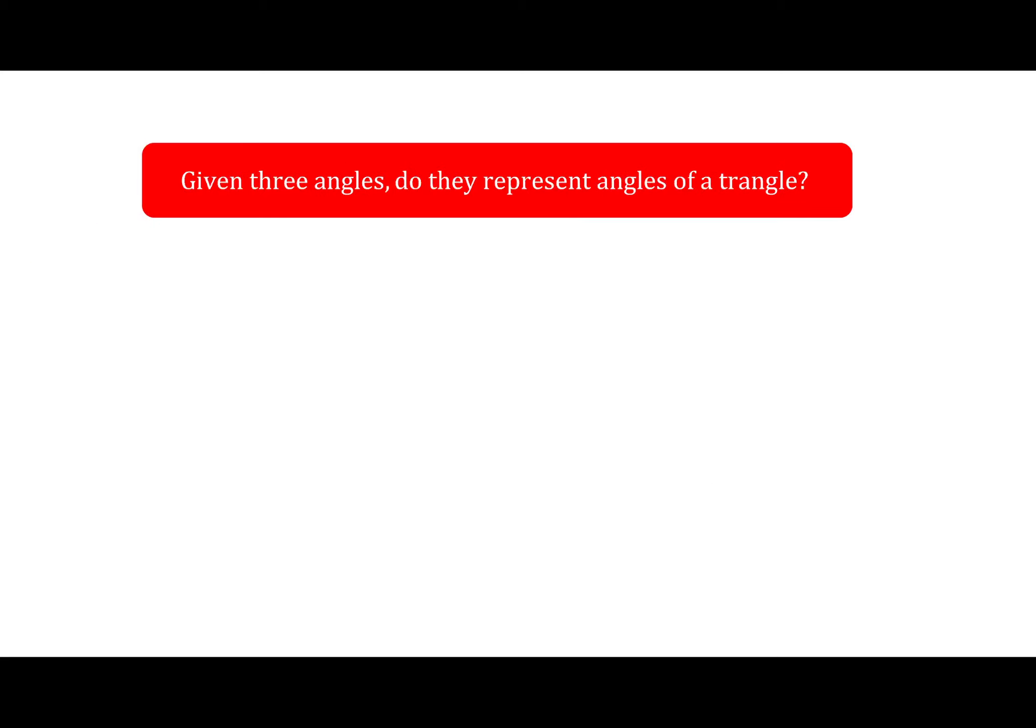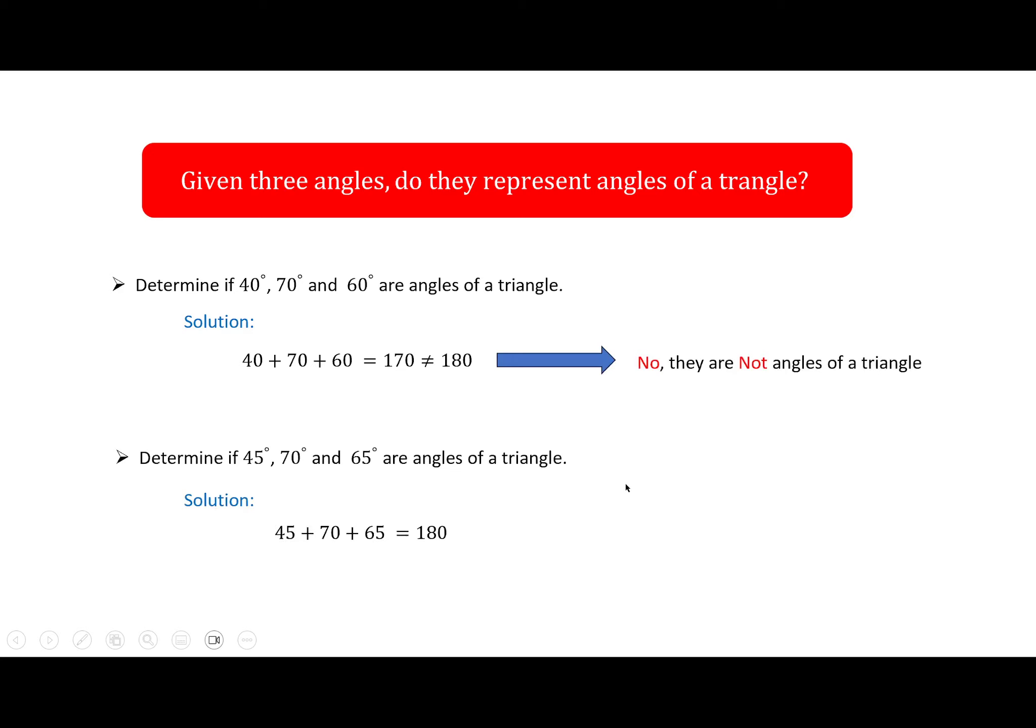Given three angles, do they represent angles of a triangle? What you have to do is add them up. If they add up to be 180, then yes, the answer is yes. If not, the answer is no. Let's try 40, 70, and 60. Add them up is 170. So those are not angles of a triangle. And now if I have another example, 45, 70, and 65, add them up, you get 180. And that is yes, they are angles of a triangle.